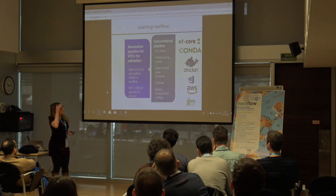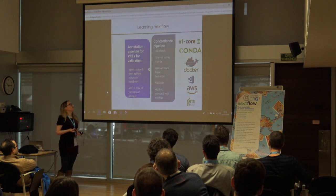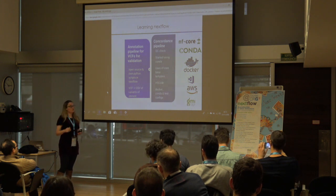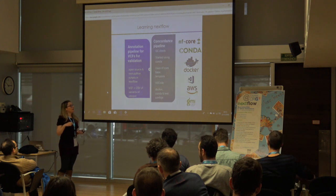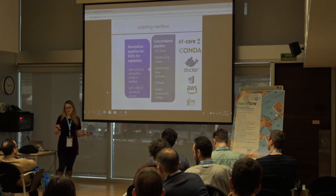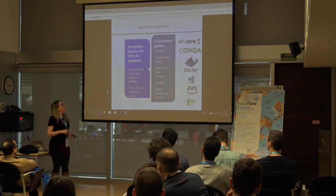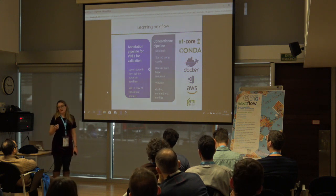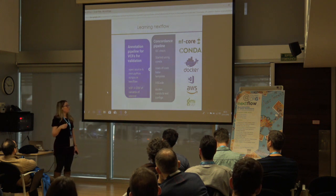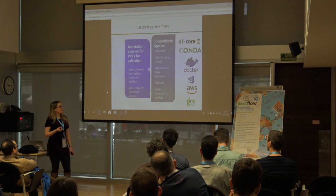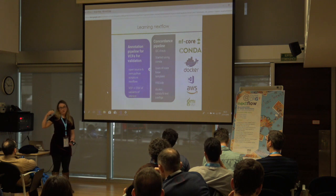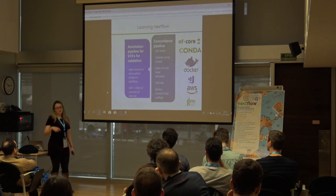One of the biggest pipelines I've written is for a QC concordance check — we take the genotyping data from when samples came into the lab, compare it to the finished sequencing data, and verify it's the same sample so nothing went wrong in the process. This pipeline evolved alongside my Nextflow knowledge. I started using Conda for it — nice quick development without worrying about installing tools. I started using nf-core as well, to test configs and learn best practices. Even though I didn't intend to submit the pipeline to nf-core, it was really great for learning good standards.